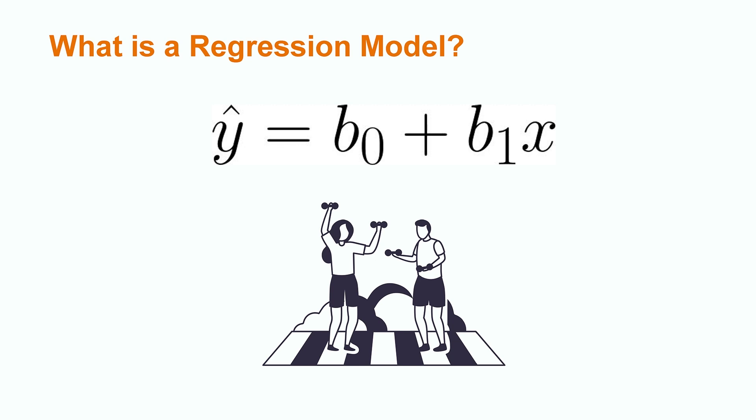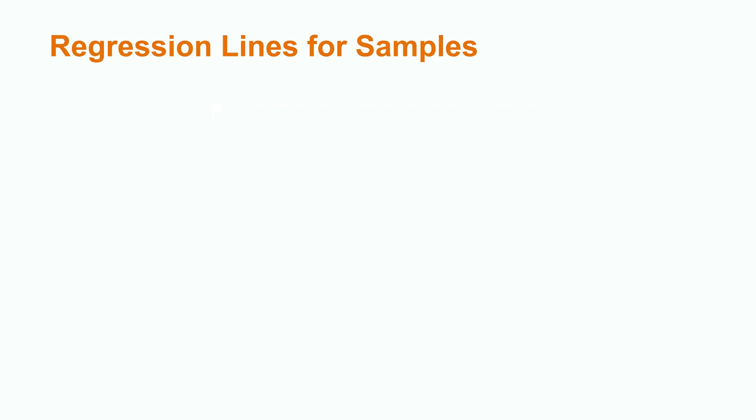In this lesson, we will be focusing on linear regression, meaning that when graphed, our data points form a line. It is important to note that regression lines differ based on whether our data is from a sample or a population.